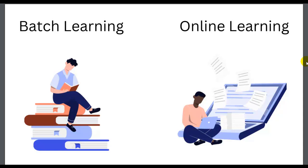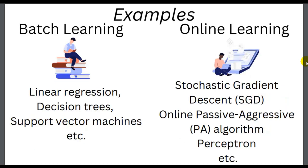The algorithm loads part of the data, runs a training step on that data, and repeats the process until it has run on all the data. This is called online learning, where model is trained incrementally as new data becomes available. As you can see here, for batch learning you can use linear regression, decision tree, support vector machines, etc. For online learning you can use stochastic gradient descent, online passive aggressive algorithm, perceptron, etc.